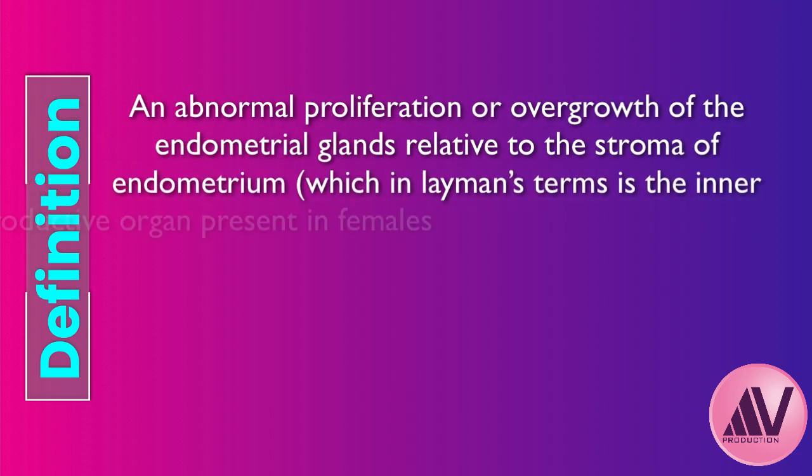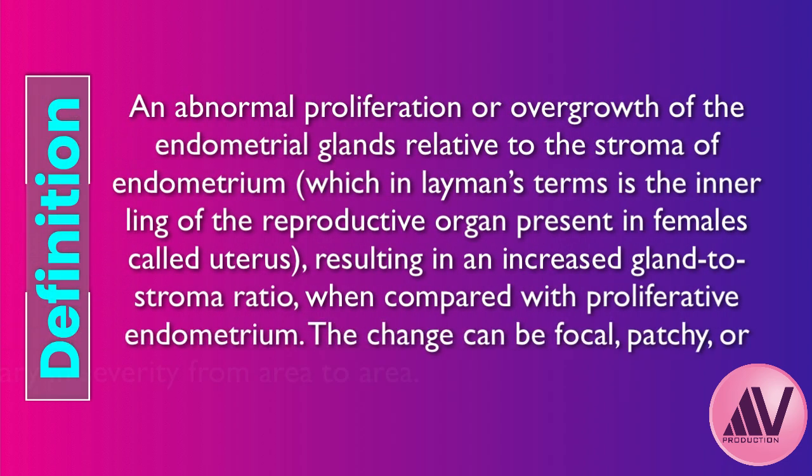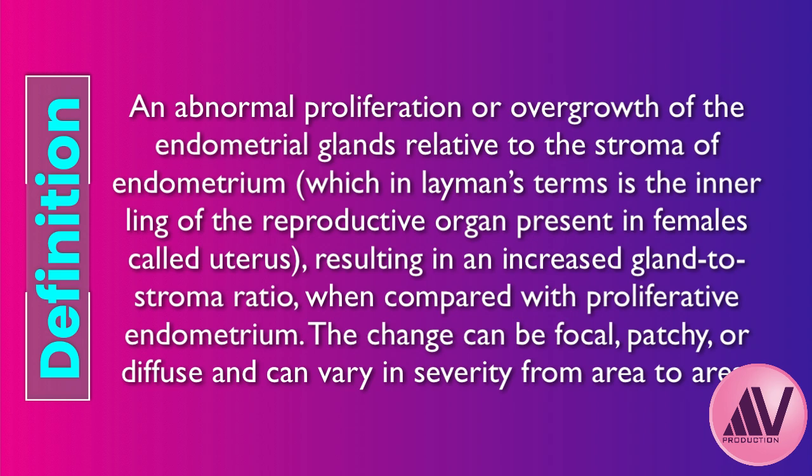So what is endometrial hyperplasia? Professor Virkud defines it as an abnormal overgrowth of the glands in the endometrium — the uterus lining — relative to the supporting tissue, the stroma. You end up with a higher ratio of glands to stroma than you'd normally see. This overgrowth isn't always uniform; it could be just in one spot, patchy, or it might cover the whole lining.